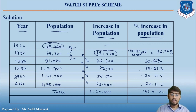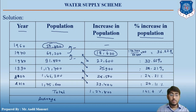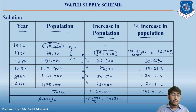Next we find out the averages. The average increase is 1,24,800 divided by 5, which equals 24,960. The average percentage increase is 141.4 divided by 5, which equals 28.28%. This 28.28% will be your value of r.